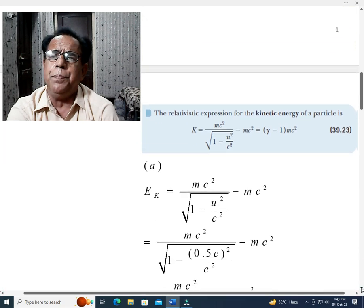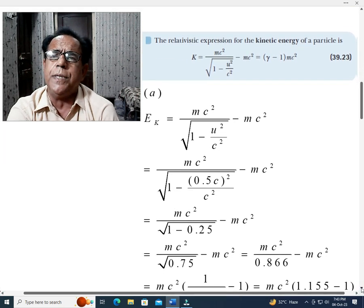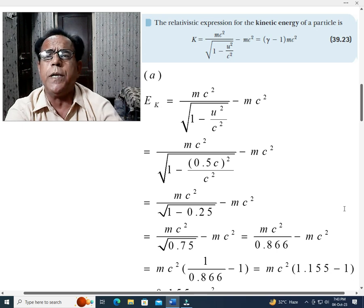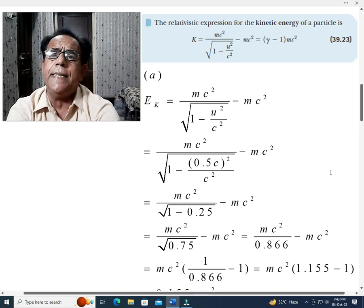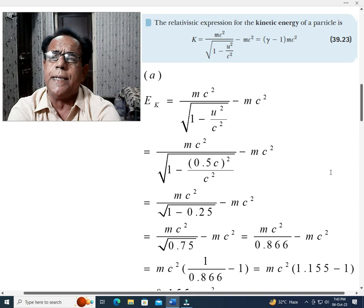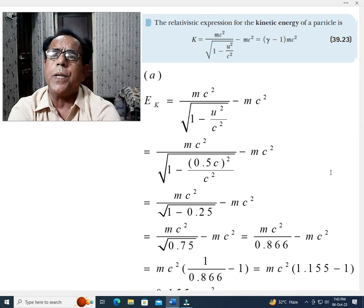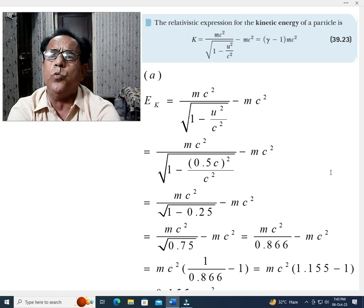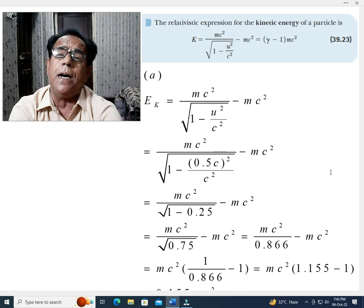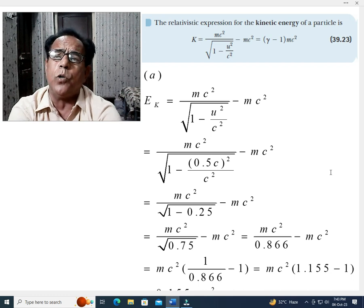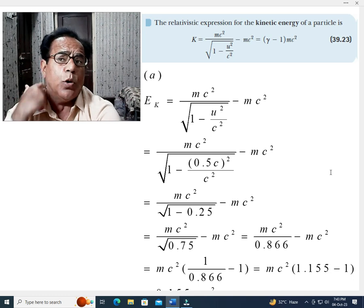While our main emphasis will be on this second snapshot, which states that the relativistic expression for the kinetic energy of a particle is K equal to mc squared over square root of 1 minus u squared over c squared minus mc squared, and this alternatively becomes equal to gamma minus 1 into mc squared, where gamma is the Lorentz factor.